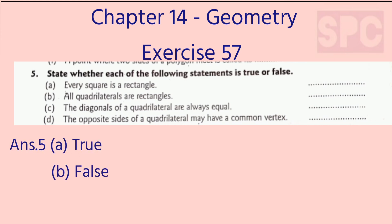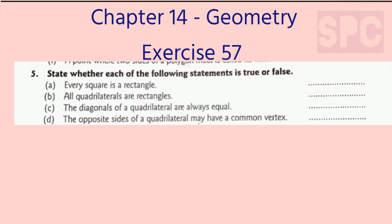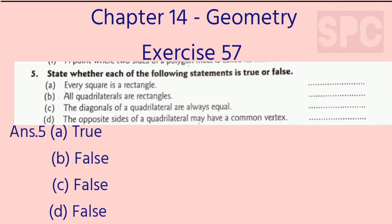Part C: The diagonals of a quadrilateral are always equal — this is false. There are some quadrilaterals in which the diagonals are not equal, so this is a false statement. Part D: The opposite sides of a quadrilateral may have a common vertex — this is also false. The opposite sides of a quadrilateral never have a common vertex.